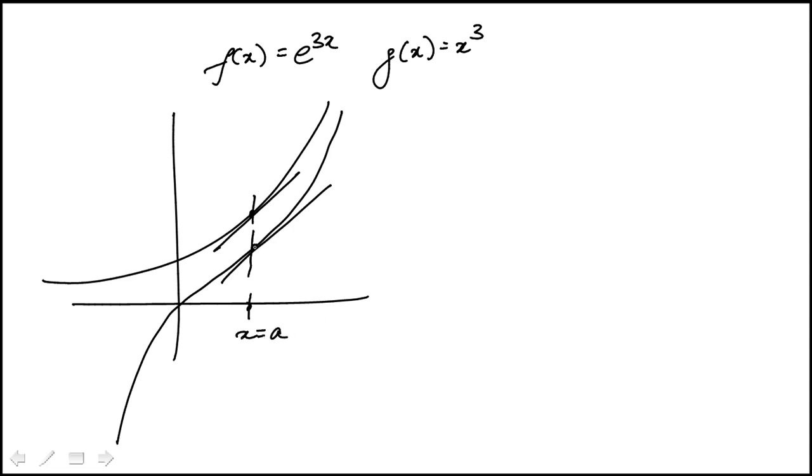So the slope or the derivative at that point has to be the same for both functions. So here f prime x, which would be the slope of the tangent line at that point, would be 3 times e to the 3x. g prime x, the derivative of that function would be 3x squared.